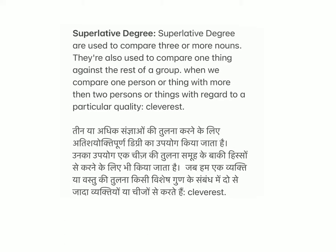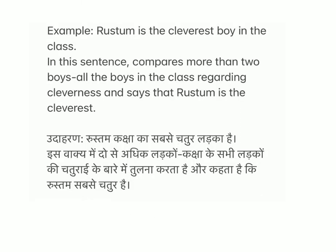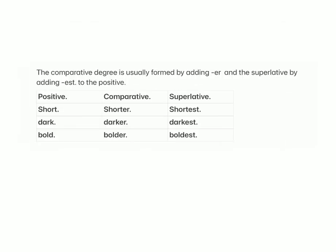Superlative degree: superlative adjectives are used to compare three or more nouns. They are also used to compare one thing against the rest of a group. When we compare one person or thing with more than two persons or things with regard to a particular quality. Example: Rustum is the cleverest boy in the class. This sentence compares more than two boys in the class regarding cleverness and says that Rustum is the cleverest.